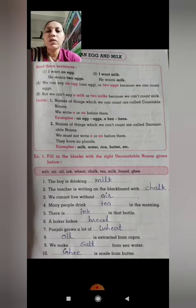Number 2, names of things which we can't count are called uncountable nouns. Aise things jahaan jisko hum count nahi kar sakte usse kehte hai uncountable noun. We must not write a or an before them. Uncountable noun mein hum uske pahle a ya an likhenge nahi. They have no plurals. Isme plurals hoote nahi hai.